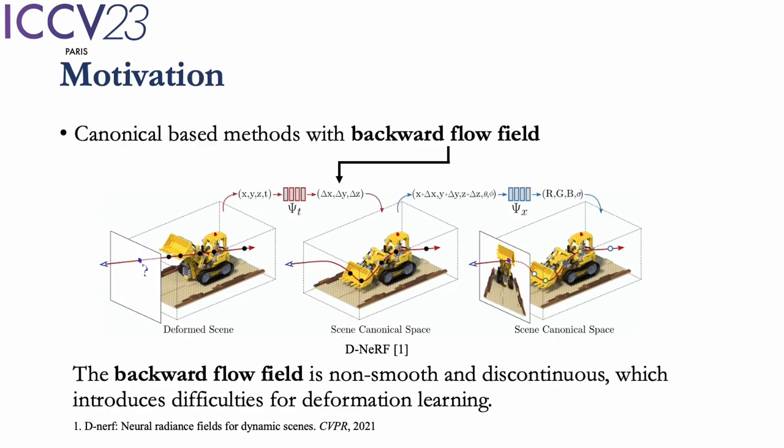Next, we introduce the scheme of the canonical-based dynamic neural radiance field and the problem of this scheme. Although the scene is dynamic, it can be represented by a static NERF for one specific time step, and we refer to this time step as canonical time, which is shown in the middle of the figure.